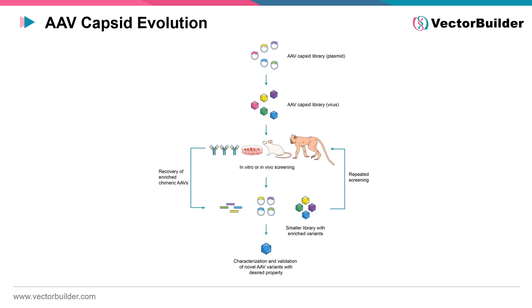The AAV capsid can be evolved through directed evolution, a powerful technique that involves iterative rounds of genetic modification and selection to enhance specific properties of a viral vector. This process begins with the generation of a diverse library of AAV capsid variants, often achieved by introducing random mutations or incorporating sequences from other serotypes. This library is then subjected to selective pressure, such as exposure to target cells or in vivo environments, to identify variants with improved transduction efficiency, altered tropism, or enhanced resistance to immune responses. Directed evolution has proven instrumental in tailoring AAV vectors for various gene therapy applications.